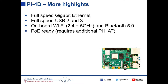The Pi 4 also has onboard Wi-Fi at both 2.4 GHz and 5 GHz, plus Bluetooth 5. It supports Power over Ethernet, which is handy for remote mounting — a single cable supplies both data and power. A HAT (Hardware Attached on Top) device is needed for PoE, costing between £10 and £15.